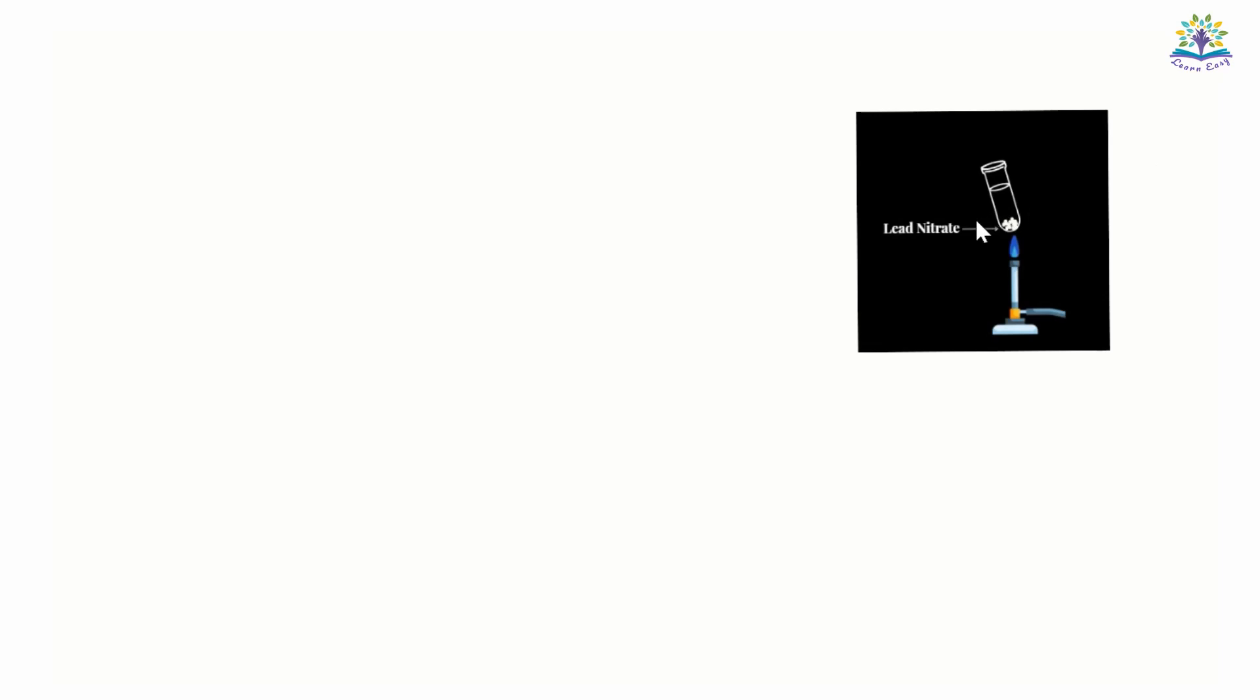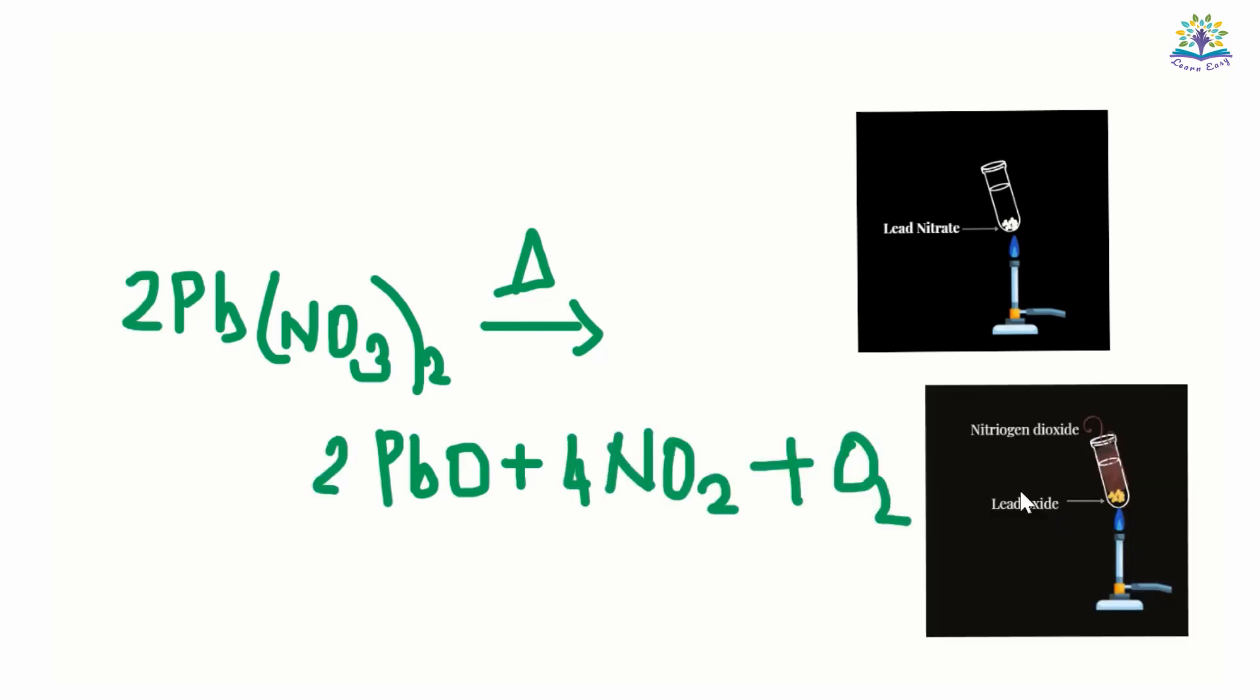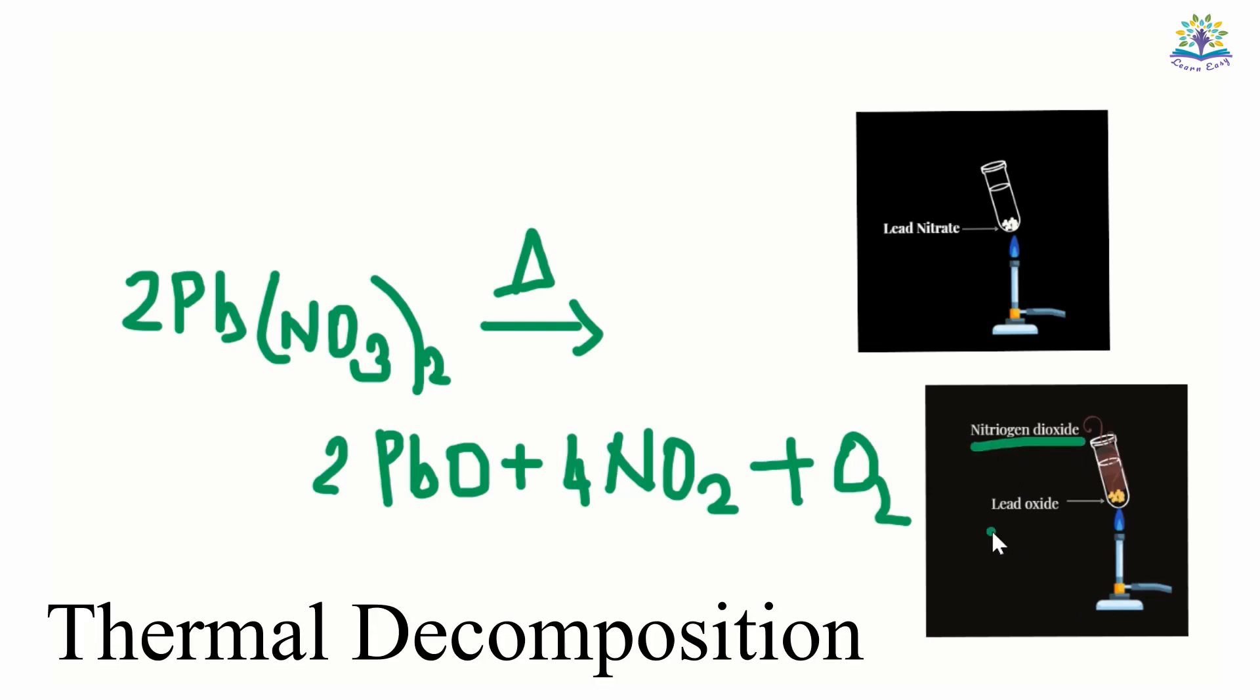Take some lead nitrate in a test tube and heat it. The white solid changes to a pale yellow solid with reddish brown fumes coming out of the test tube. Here, lead nitrate absorbed heat and decomposed to form lead oxide, nitrogen dioxide, and oxygen. This type of reaction is also known as thermal decomposition.